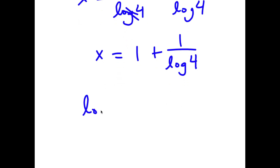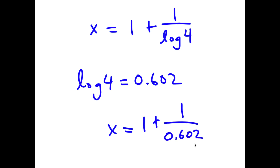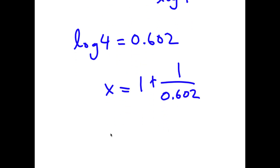Log 4 is equal to 0.602. So I get x is equal to 1 plus 1 over 0.602. And 1 divided by 0.602 is 1.66. So 1 plus 1.66 gives x approximately equal to 2.66.